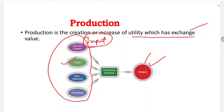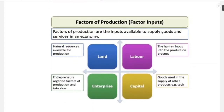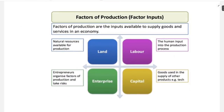Labor, raw materials, and technology are inputs, also known as factors of production. These inputs go through the production process to produce an output, also known as the product. We will now see the factors of production. Basically, we have four factors of production.